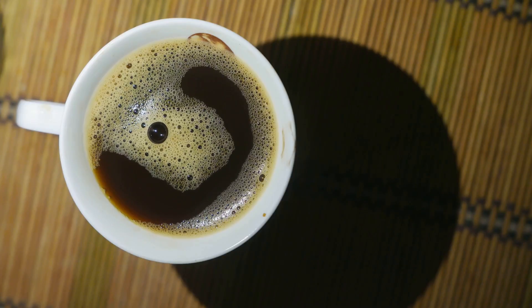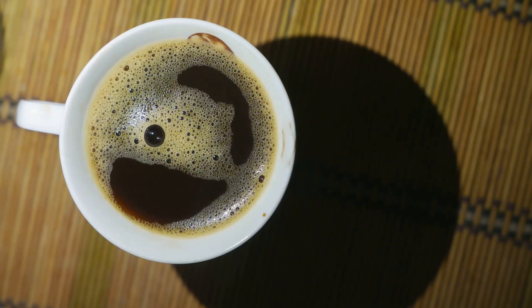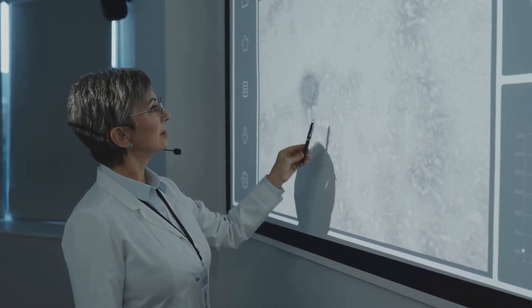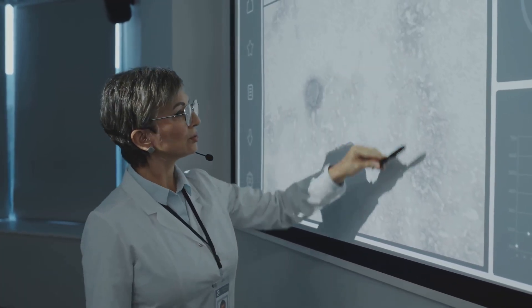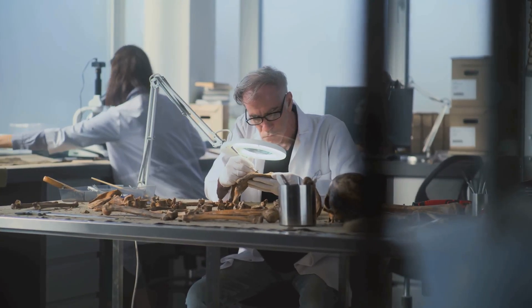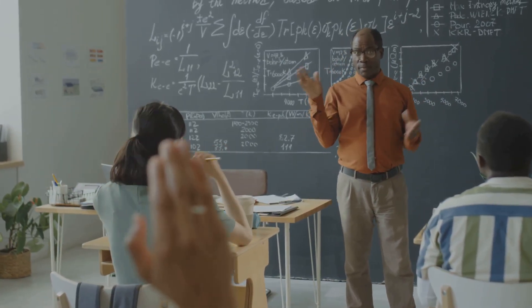Greetings, science fans. Roxanna here. Ever notice how things fade away, like soda foam, hot coffee, or your phone's value? That's exponential decay, a process where something decreases at a rate proportional to what's left. The more you have, the faster it disappears. As it dwindles, the loss slows. This isn't just math — it's a universal pattern from atoms to economies. Understanding exponential decay reveals the hidden math shaping our world. Ready to see it in action? Let's explore seven fascinating examples.